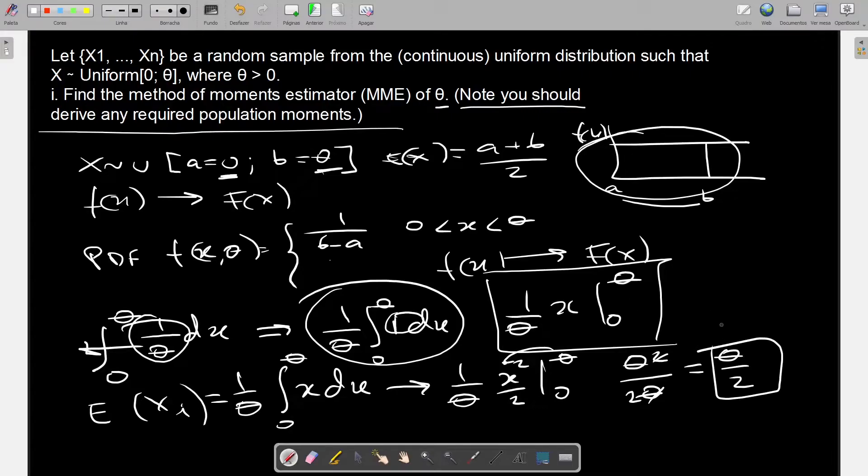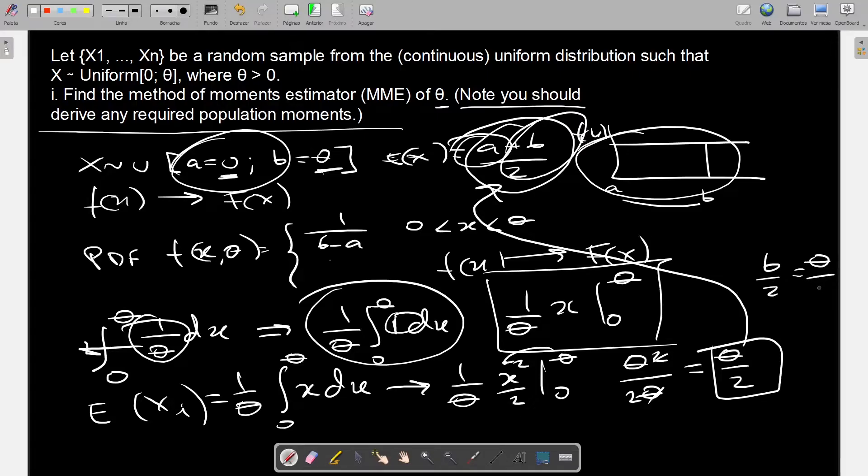And if you look at this, this is the exact same thing that we were talking about in the beginning. It's a plus b divided by 2, and because a equals 0, so you're left off with b divided by 2, which is the same thing as theta divided by 2.